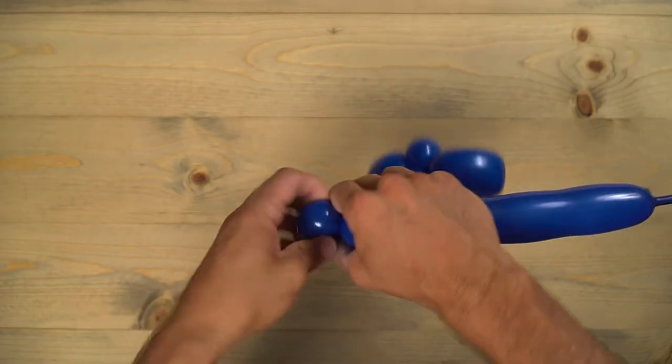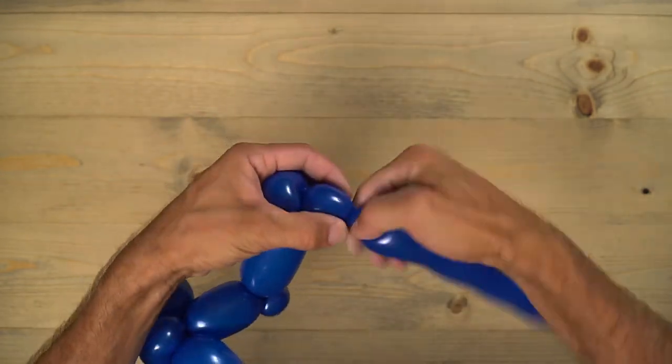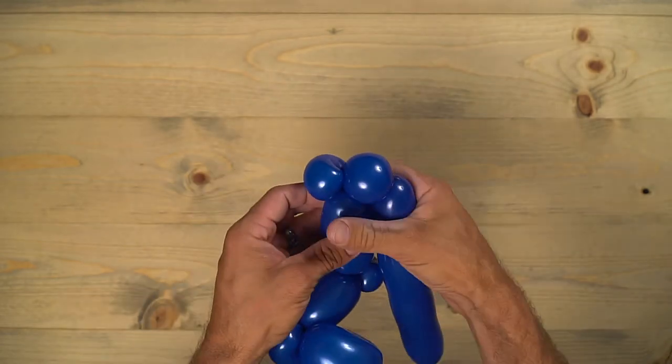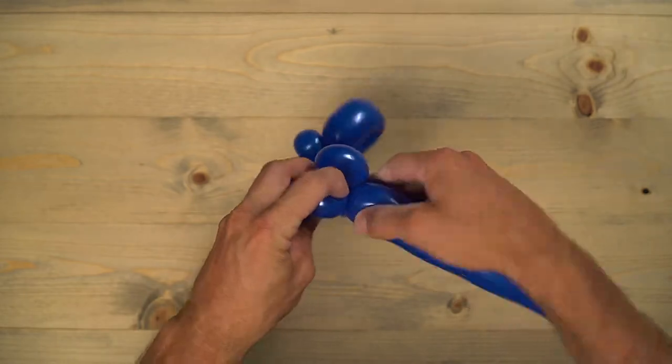And then do a second one. So make a one-inch bubble and pinch twist it again. You can twist those two together to do that. Straighten it out.